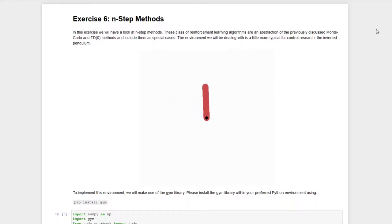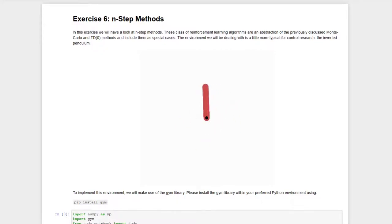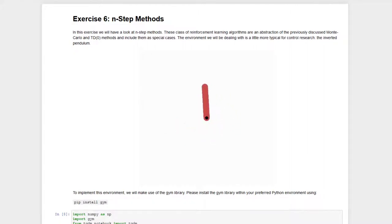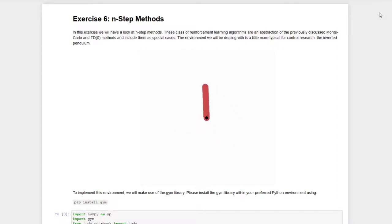In between these two extremes there are the n-step methods. In n-step methods we can decide ourselves whether we want to learn after one step, after the end of the episode, or something arbitrarily in between — maybe after five steps, after ten steps, and so on. Hence n-step methods are an abstraction of Monte Carlo and temporal difference methods and include these as special cases.